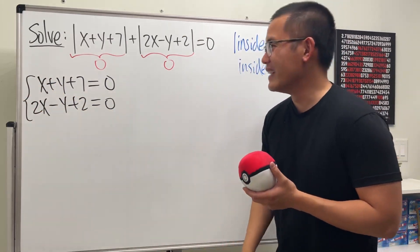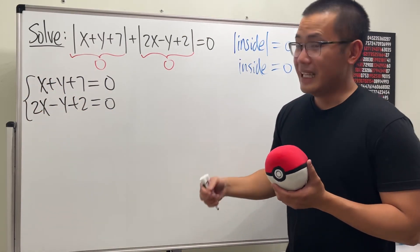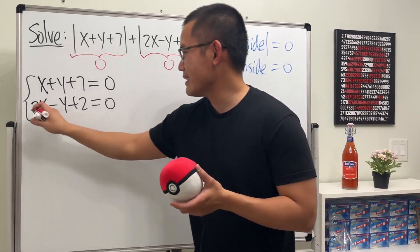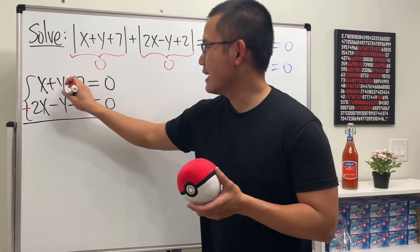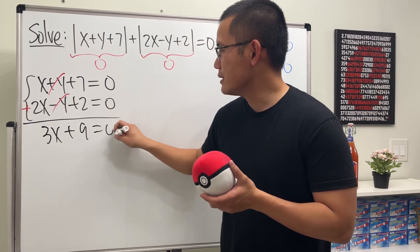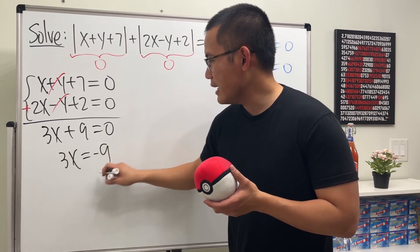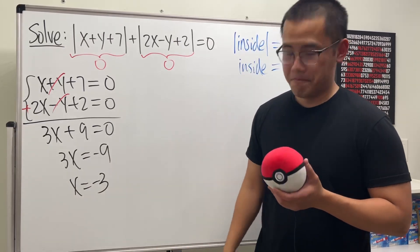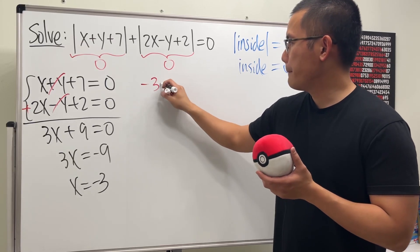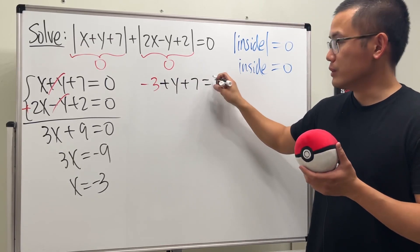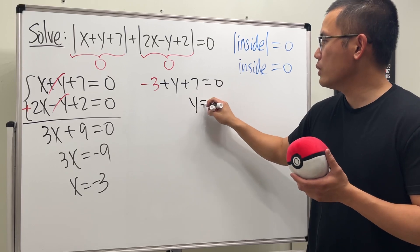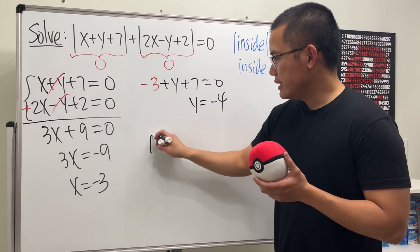So how do we solve this? You can move the numbers to the other side first, but it doesn't really matter. You can just combine them right away. You can see that the y terms cancel nicely, giving us three x plus nine equals zero. So three x equals negative nine, meaning x equals negative three. Plugging back in: negative three plus y plus seven equals zero, so y equals negative four.